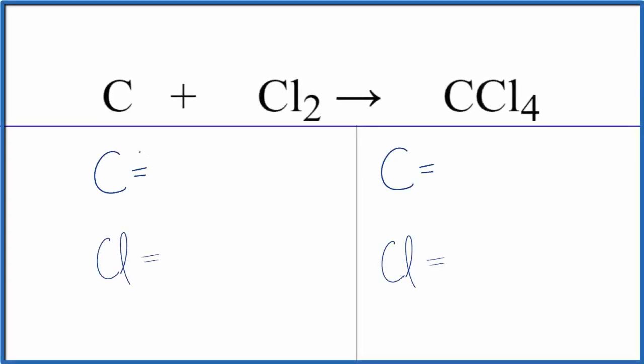Someone requested that I balance this equation: carbon plus chlorine gas gives us carbon tetrachloride. I'm not sure if this reaction happens or what conditions you would need. There are two links in the description showing reactions that do produce carbon tetrachloride.